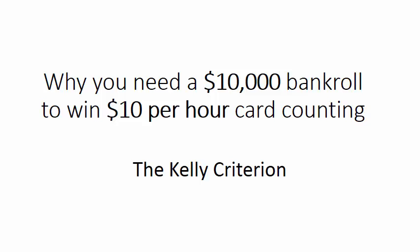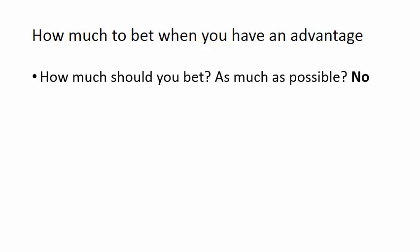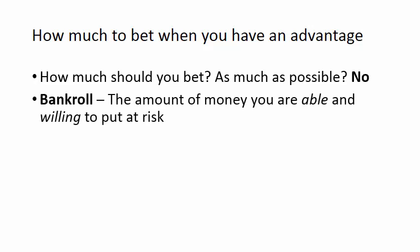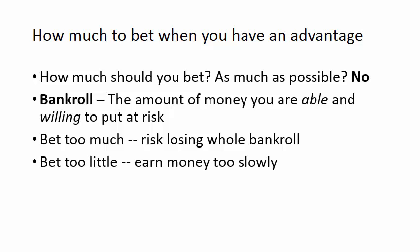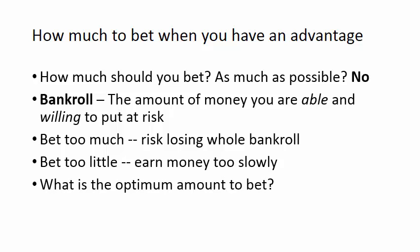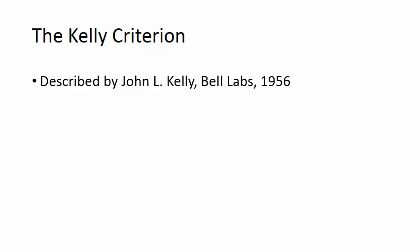Why you need a $10,000 bankroll to win $10 per hour card counting. The Kelly Criterion. How much should you bet when you have an advantage? It depends on your bankroll — the amount of money you are able and willing to put at risk. Bet too much and you risk losing your whole bankroll. If you bet too little, you earn money too slowly. What is the optimum amount to bet? The Kelly Criterion gives the answer. It was first described by John Kelly in the 1950s.